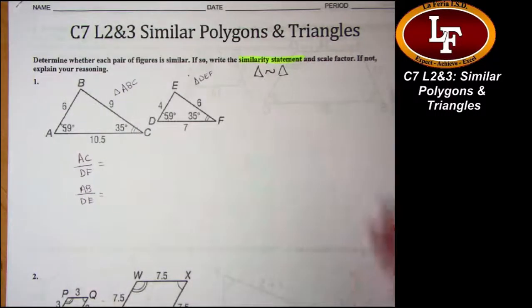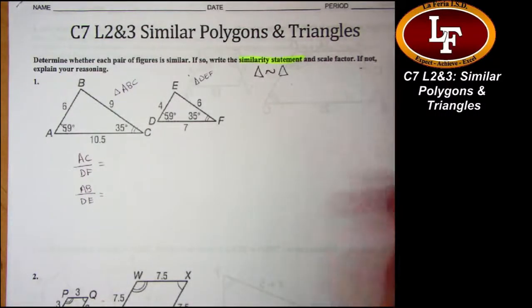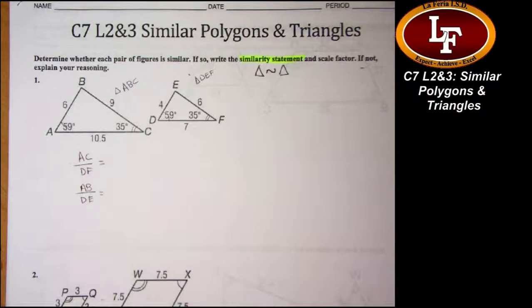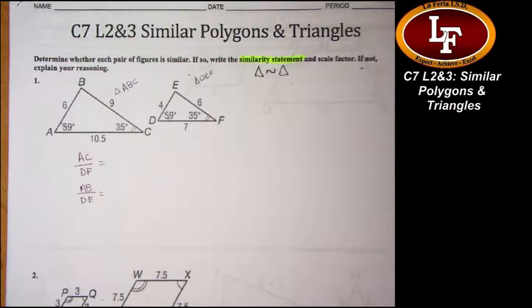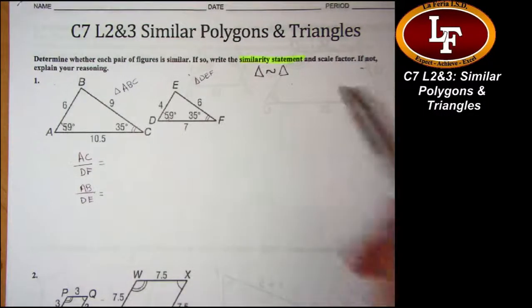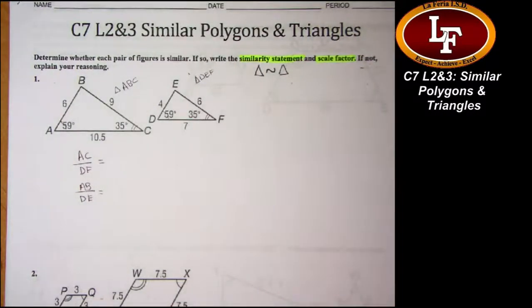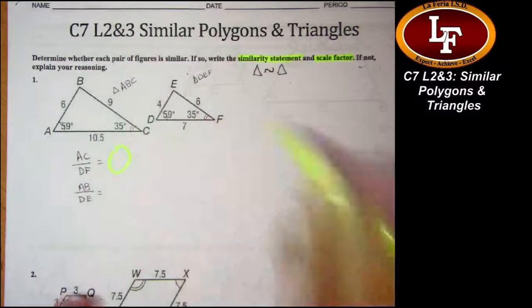All right. If for whatever reason you find that they're not similar, you have to explain your reason. Either the angles weren't congruent or the sides weren't proportional. Okay? Those are really your only two explanations as to why they're not going to be similar. The next thing that I was asked was, what's a scale factor? These fractions. That's it. If they're similar, those fractions are the scale factor, you're welcome.